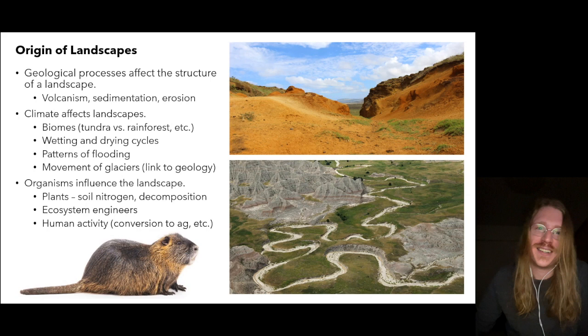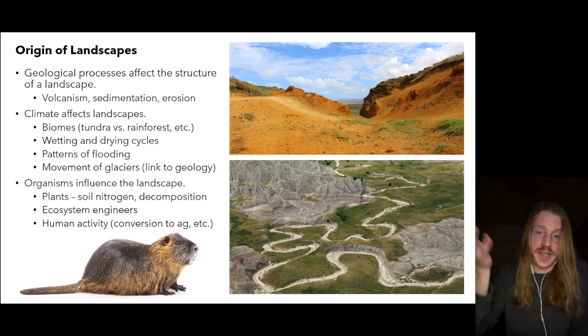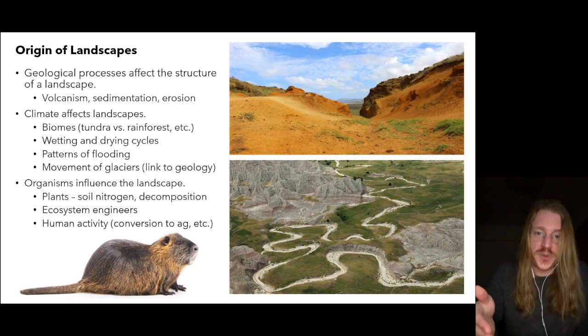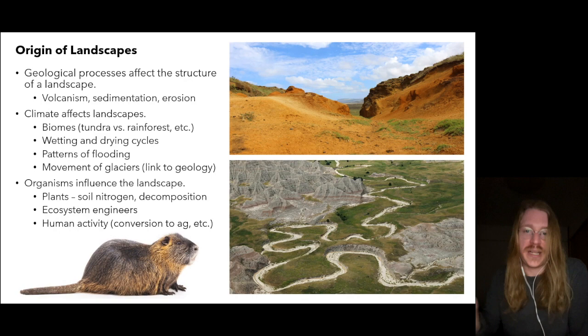Other ecosystem engineers besides humans include African elephants, which knock down trees and can gradually change a woodland to a grassland. Alligators help maintain ponds in the Florida Everglades. And kangaroo rats, prairie dogs, termites, and even earthworms dig burrows that modify soil structure — all of which influences the entire ecological landscape.